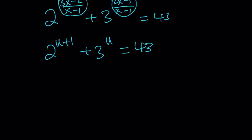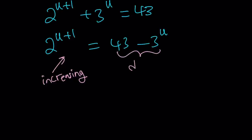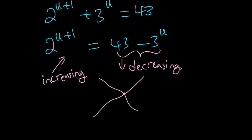There are a couple of different ways to look at it. I'm going to isolate 2 to the power of u plus 1 and write this as 43 minus 3 to the power of u. One thing to keep in mind: 2 to the power of u plus 1 is an increasing function because it's exponential with a base greater than 1. And 3 to the power of u is also increasing, but when you negate it and subtract it from the constant 43, it becomes a decreasing function. So we have a function that is increasing and one that is decreasing — they are equal, which means they intersect. But they can only intersect at a single point.